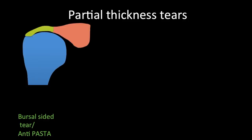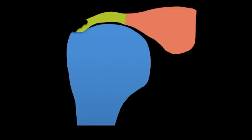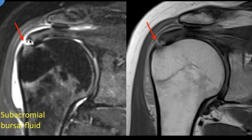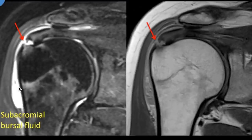Similarly, in bursal sided tears the articular surface is intact. These are sometimes referred to as antipasta. This is an approximately 75% thickness bursal sided tear where the articular fibers are intact to some extent and there is fluid in the adjoining subacromial bursa.